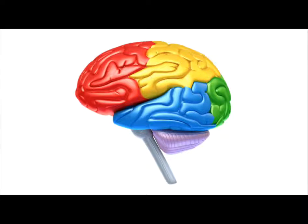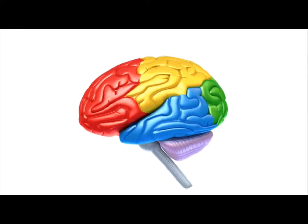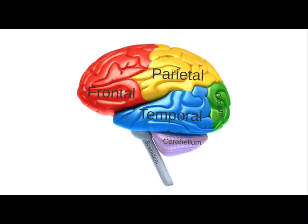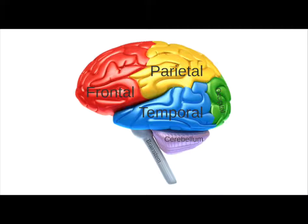Let's talk about the brain, the regions of the brain, and how an injury of any of these regions might impact a person's functional and cognitive abilities. To start, we have to look at the brain in various different lobes. In red we have frontal, in yellow we have parietal, in blue we have temporal, in green we have occipital, in purple we have cerebellum, and gray brainstem down below.